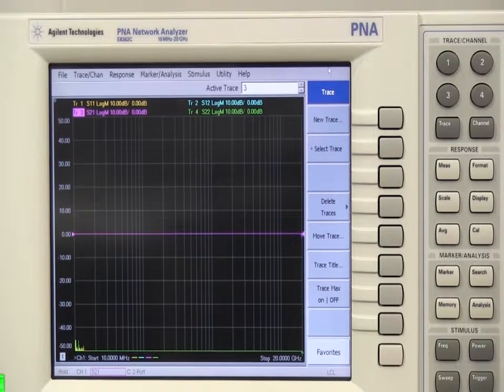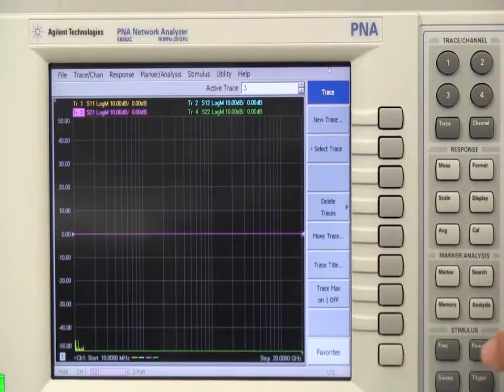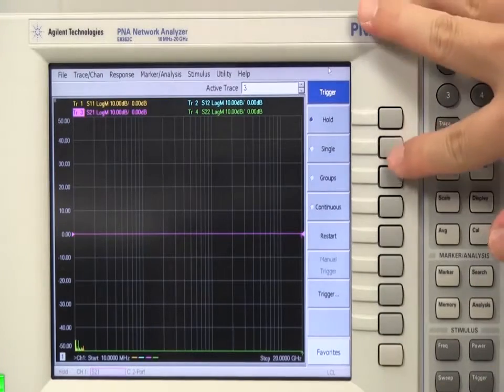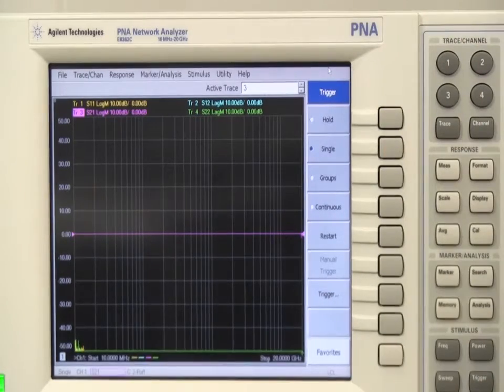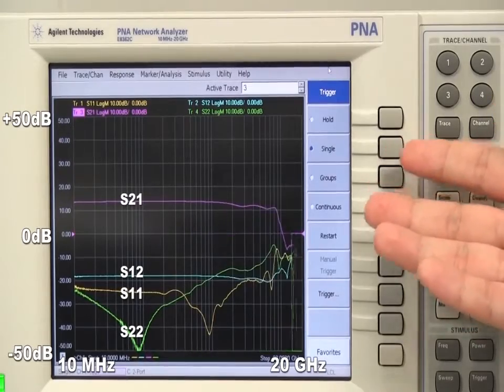Now the device is ready, so we can start the measurement. Press the trigger button, and then start. This is the S-parameter measurement result.